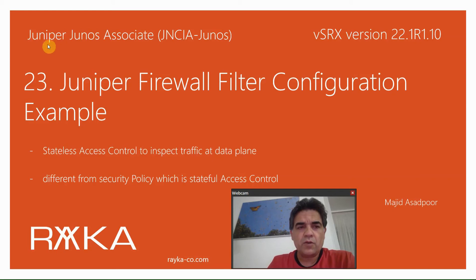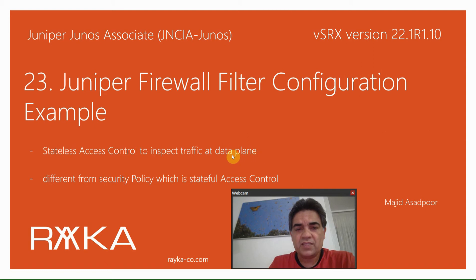Welcome to another video of the Juniper JUNO's Associate Course. In this section I will talk about Juniper firewall filter concept and configuration, which is a security solution to control traffic at the data plane — exactly like an access control list in Cisco devices. Juniper firewall filter is stateless, which is different from the security policy solution, which is a stateful access control.